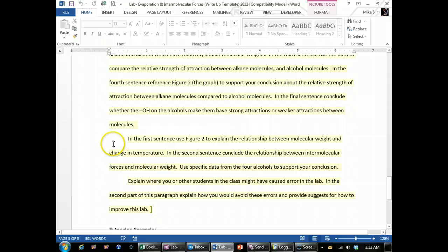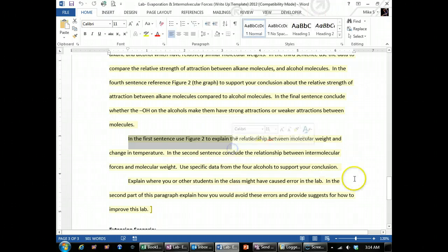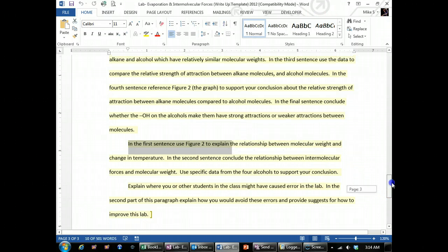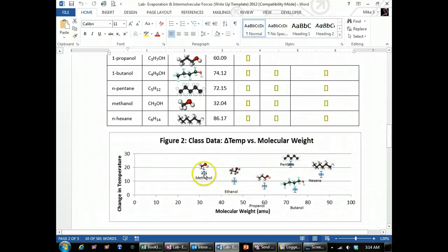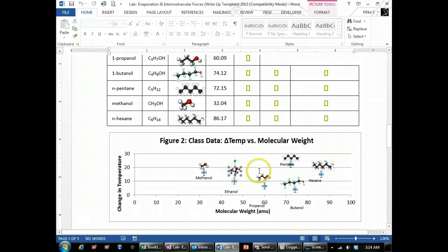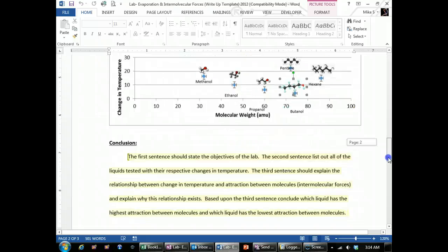Then the first sentence, use figure two to explain the relationship between molecular weight and change in temperature. So you can only look between similar molecules. So in this case, you've got methanol, ethanol, propanol, which that's down here, and then you have butanol. So the trend, what's the trend as you look down at the, as the molecular weight increases, what happens to the change in temperature and therefore what happens to the attraction between molecules.